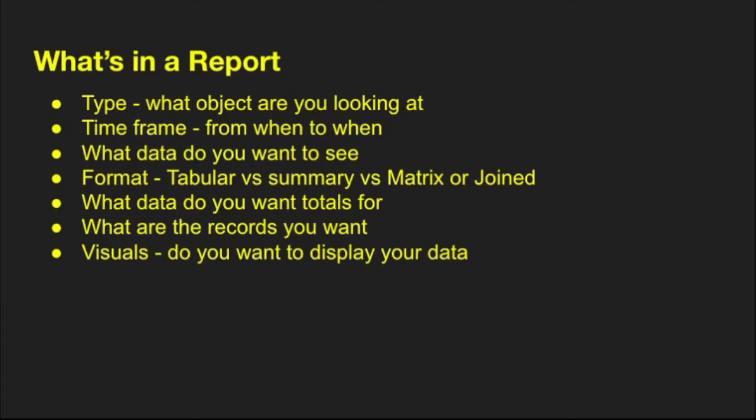So first, what's a report? In a report, you need to identify the type — what object or objects are you looking at? What is the timeframe, so from when to when? What data do you want to see, so within that object, what are the fields you want to look at? What's the format — tabular versus summary, matrix, or join? Do you need any totals or summation of those values? What are the records that you want? Do you need to add additional criteria or any visual aspects on top of just the basic data?